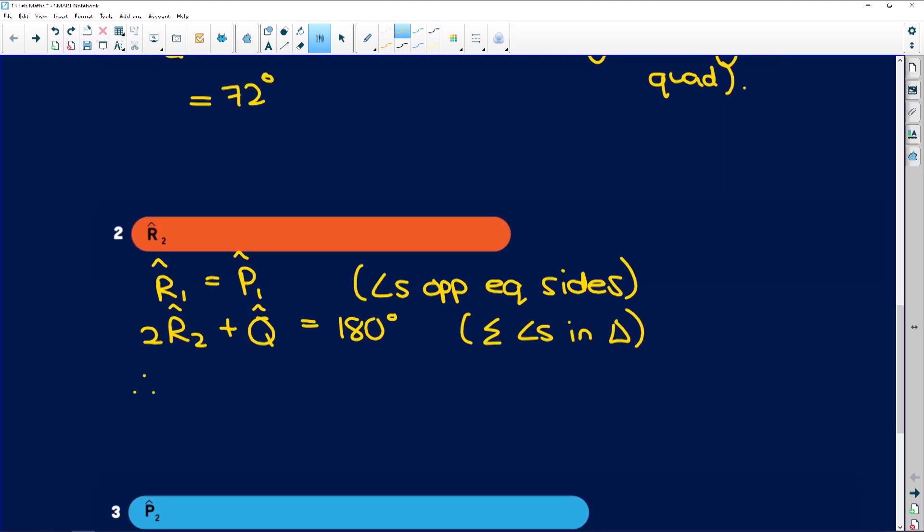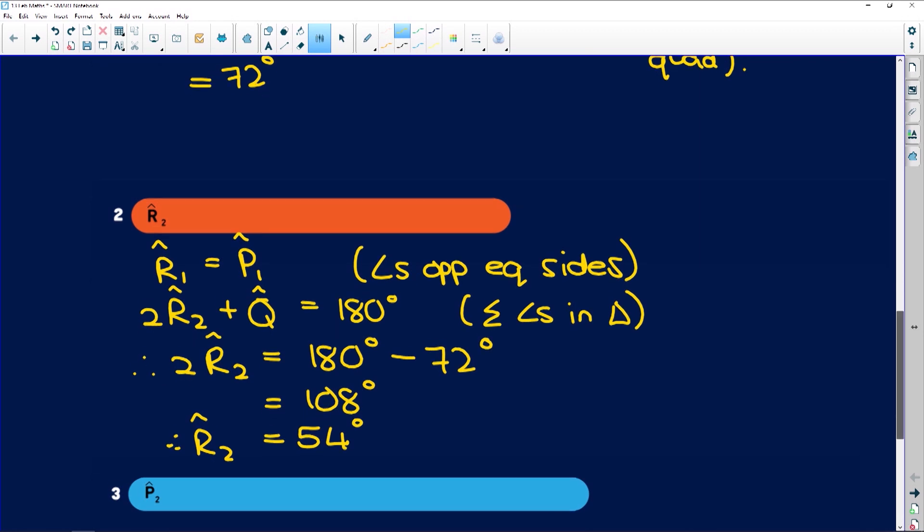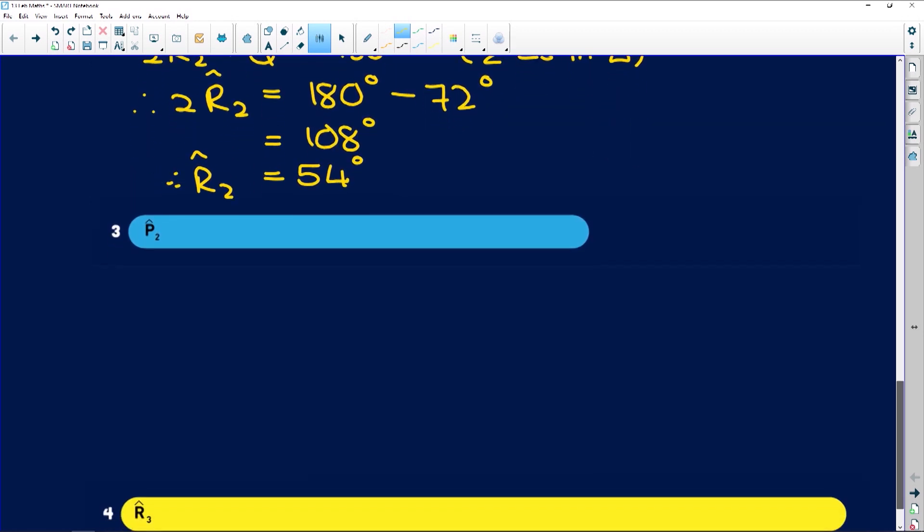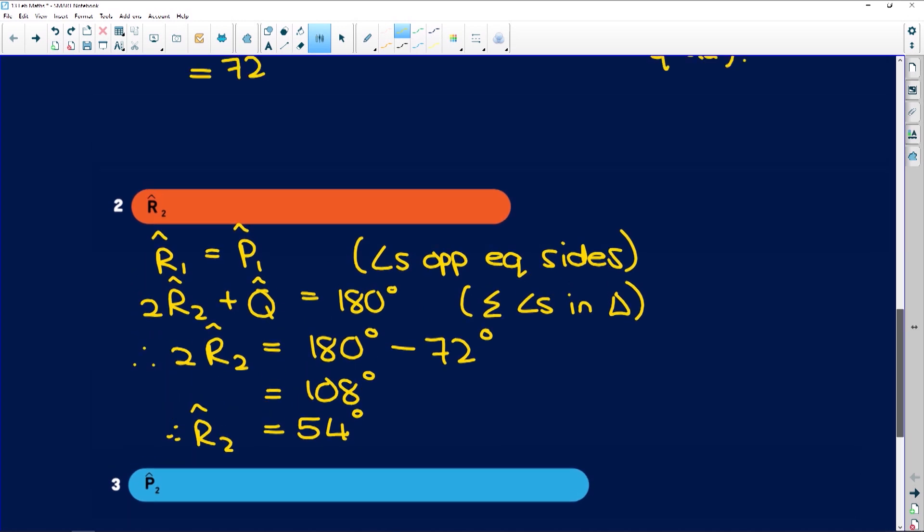So, therefore, 2 R2 is equal to 180 degrees minus 72, which is equal to 108 degrees. But that is twice R2. So, therefore, R2 is equal to 108 divided by 2, which is 54 degrees. Okay. Easy peasy.